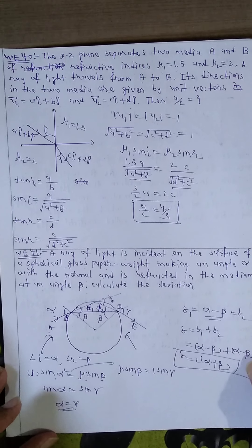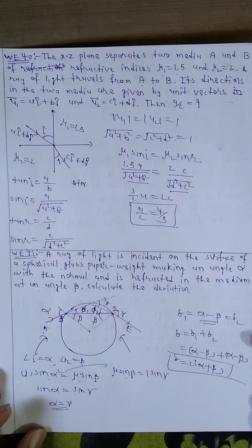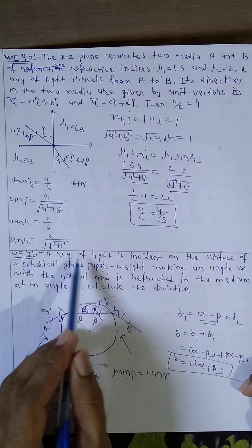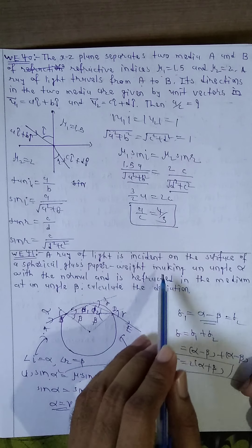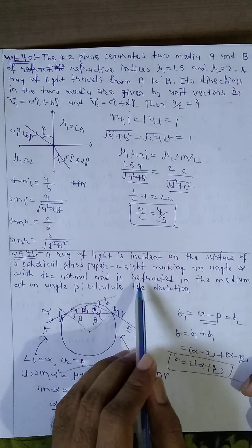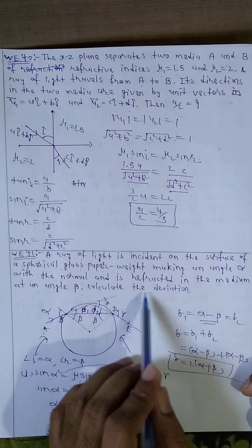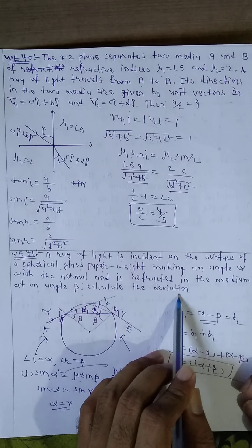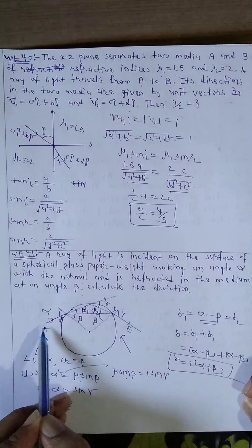Now next, a ray of light is incident on a surface of spherical glass paperweight making an angle alpha with the normal and is refracted in the medium at an angle beta. Calculate the deviation.